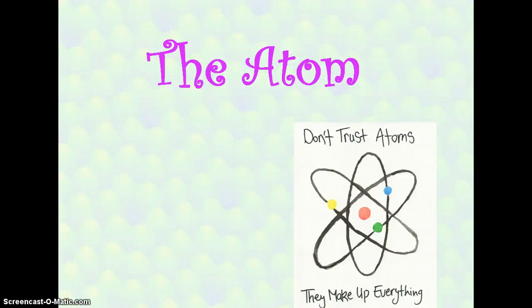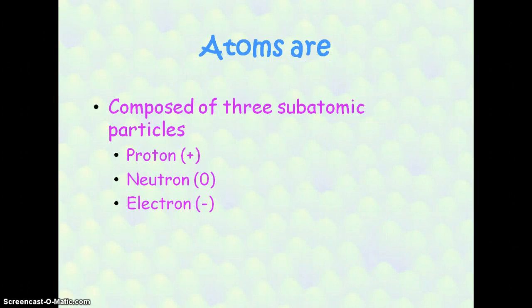In this podcast, we're going to talk about the atom. Atoms are composed of three subatomic particles: the proton, which is positive; the neutron, which is neutral or no charge; and the electron, which is negative.